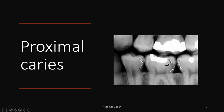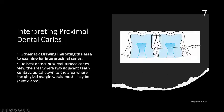If the caries has continued into the dentine, then another triangle will form whose apex is towards the pulp and base is towards the dentinoenamel junction. So in order to see proximal caries, we have to concentrate on this rectangular area above the crest of the gingiva, above the cementoenamel junction but close to the contact area — either very close to the contact area or slightly apical to it. Here we can see a schematic diagram which indicates the area to examine to best detect the proximal surface caries: view the area where two adjacent teeth contact, apical down to the area where the gingival margin would most likely be present — this boxed area.